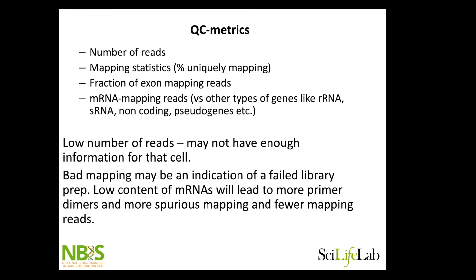If we have really bad mapping, it might just be due to low RNA amounts. You get a lot of primer dimers if you have too much tagmentation versus how much cDNA you have in the sample, and then you get a lot of weird mapping artifacts. And if we don't have enough reads in the cell, it might be a real cell, but we don't have enough information to say something meaningful about it.